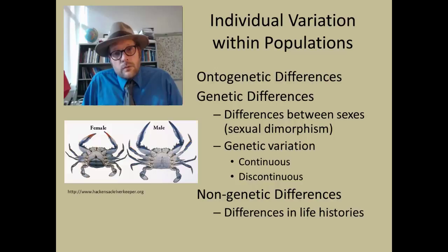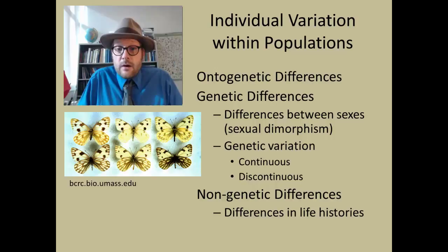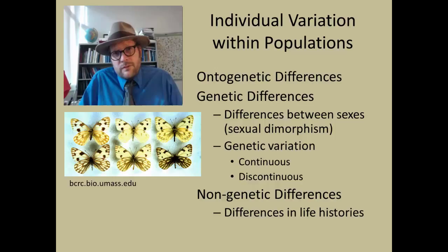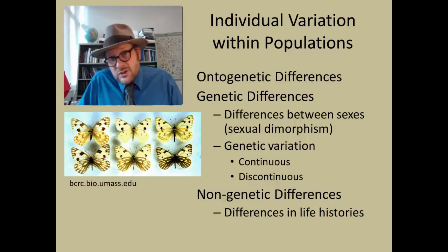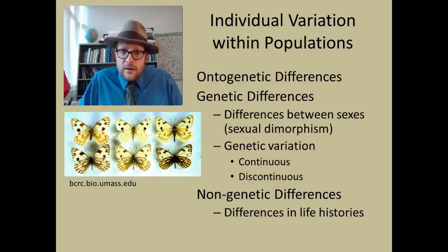Some groups have incredible sexual dimorphism while others have very little. Genetic variation is just the variation within a population — eye color is a good example, where individuals have different colors and appearances. Variation could be continuous or discontinuous; here's an example of a butterfly species exhibiting different types of individual variation within a population. That genetic variation is really important because that's how natural selection is going to operate. Each individual is unique, and that's what we try to capture when we measure lots of specimens in the fossil record. You also have to be aware of non-genetic differences — differences in the life histories of an individual.